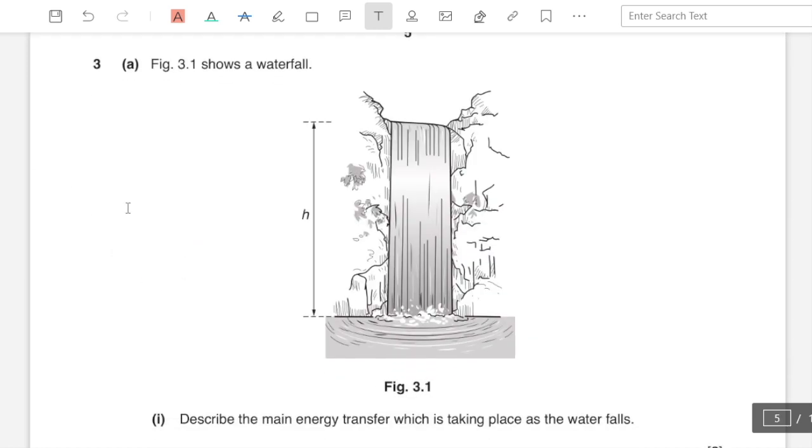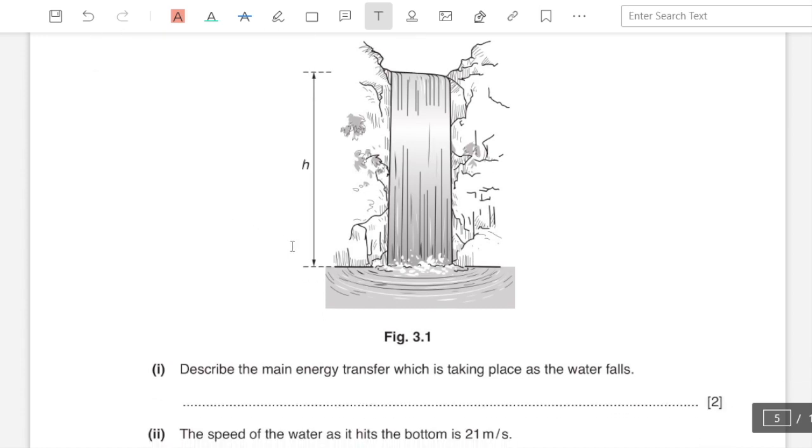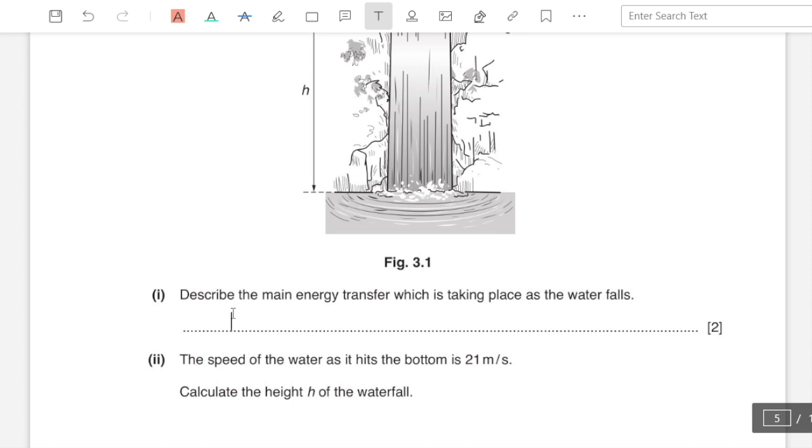Question number three part a: figure 3.1 shows a waterfall. Describe the main energy transfer which is taking place as the water falls. The water initially has gravitational potential energy which gets converted into kinetic along with heat and sound energy.